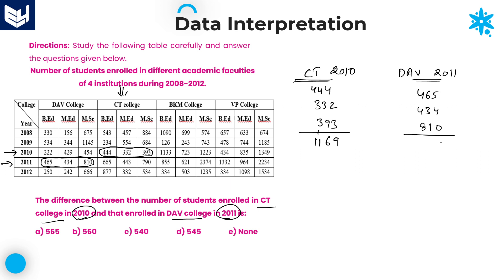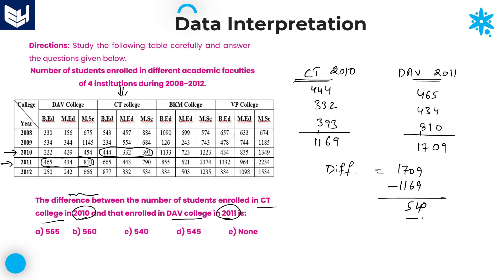Adding DAV college 2011: 465 plus 434 plus 810. Units: 5 plus 4 plus 0 is 9; tens: 6 plus 3 plus 1 carry gives 10; hundreds: 8 plus 8 plus 4 plus 1 carry gives 1709. The difference is 1709 minus 1169 equals 540. Option C is the right answer for this question.